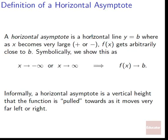A horizontal asymptote is a horizontal line y equals b where, as x becomes very large — positive or negative — f of x gets arbitrarily close to b. Symbolically, we show this as: as x goes to negative infinity or x goes to positive infinity, f of x will go to b. It might not get perfectly to b — in fact it almost certainly won't — but it will get really, really close; it will get arbitrarily close to it.